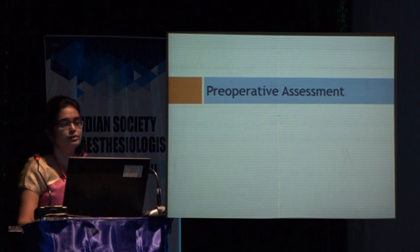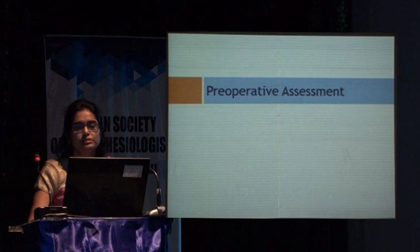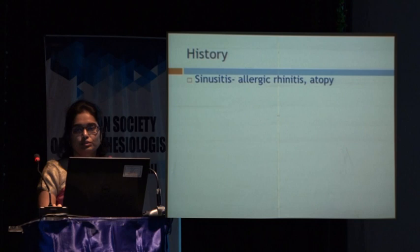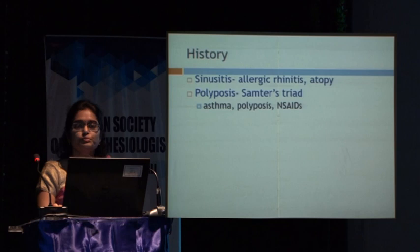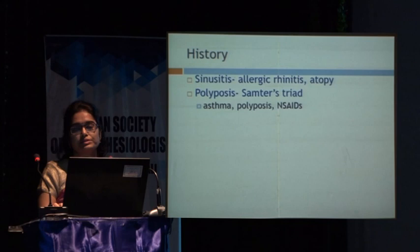So how do we go about it? We start with our usual preoperative assessment. If the patient has sinusitis, he may have allergic rhinitis and atopy. If there is polyposis, look out for the Samter's triad — they can have asthma along with their polyposis, and they are allergic to aspirin.